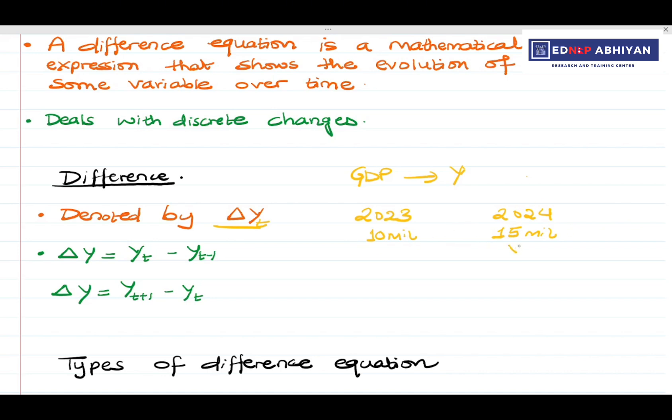We denote the present time, say 2024, as yt. And the previous period, 2023, is denoted as yt-1.